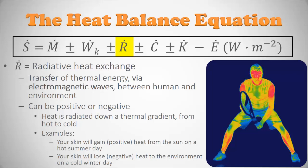The first heat dissipation mechanism is radiative heat exchange — the transfer of thermal energy via electromagnetic waves between you and the environment. It can be positive or negative. Heat is radiated down a thermal gradient from hot to cold. A thermographic image of a person playing sports shows red areas for high temperatures and blue areas for cooler temperatures — the arms and calves doing work show increased temperatures because the muscles there are generating a lot of heat.